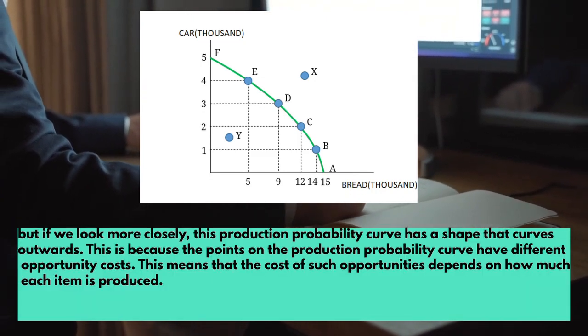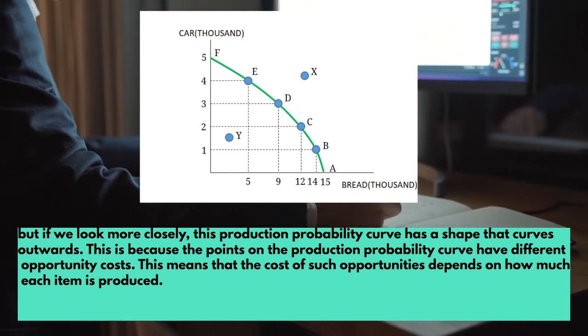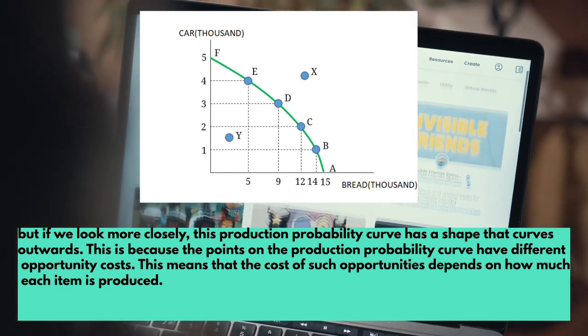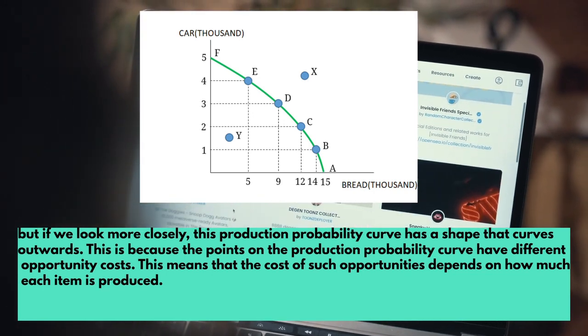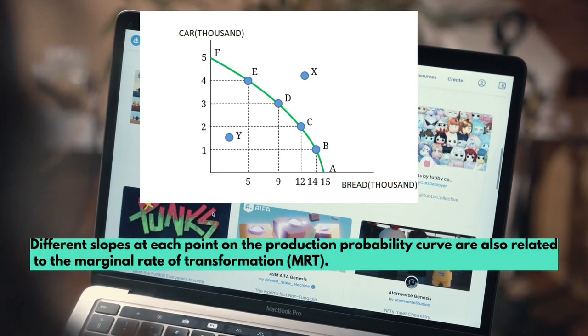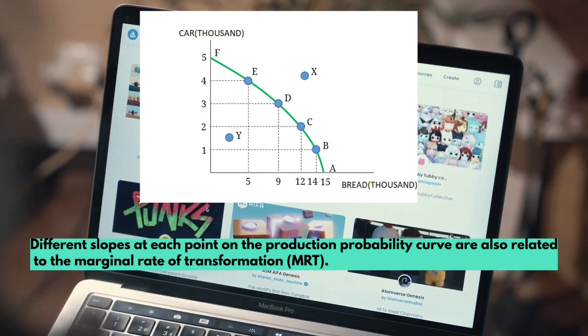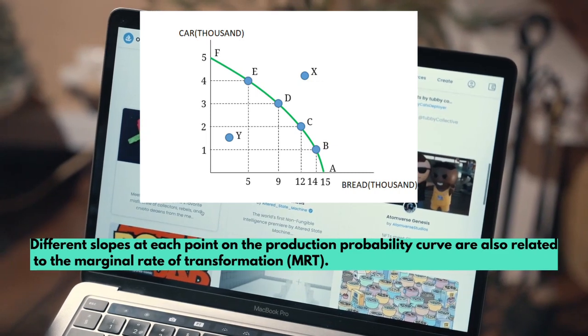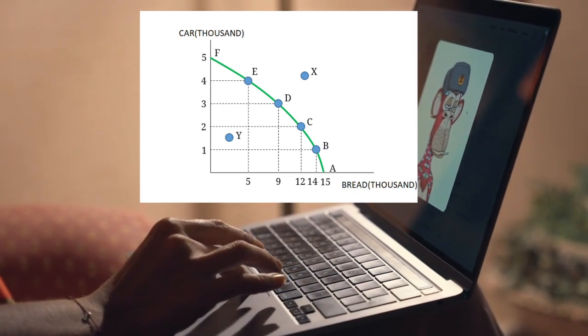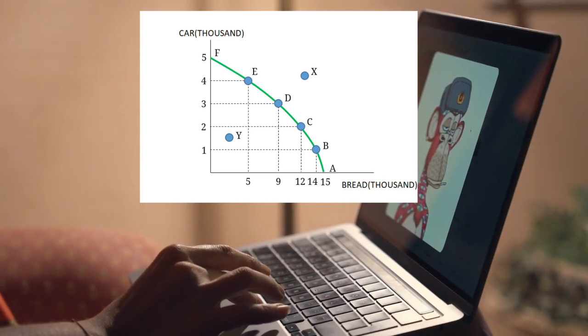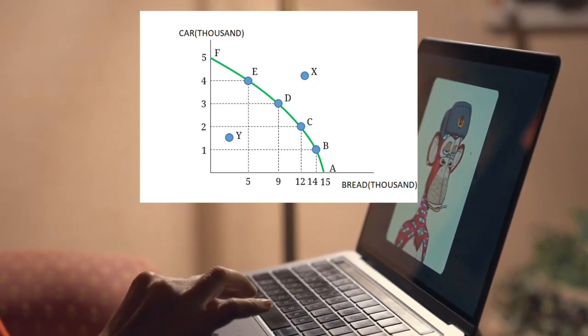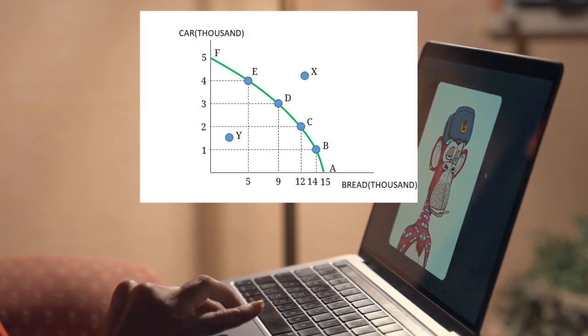But if we look more closely, this PPC curve has a shape that curves outward. This is because the points on the PPC have different opportunity costs. This means that the cost of opportunity depends on how much each item is produced. Different slopes at each point on the production possibility curve are also related to the marginal rate of transformation, or MRT. MRT on PPC shows how much of an item must be sacrificed to get one additional unit of another item. The production possibility curve has an ever-increasing MRT value, so the shape of the curve becomes curved outward.